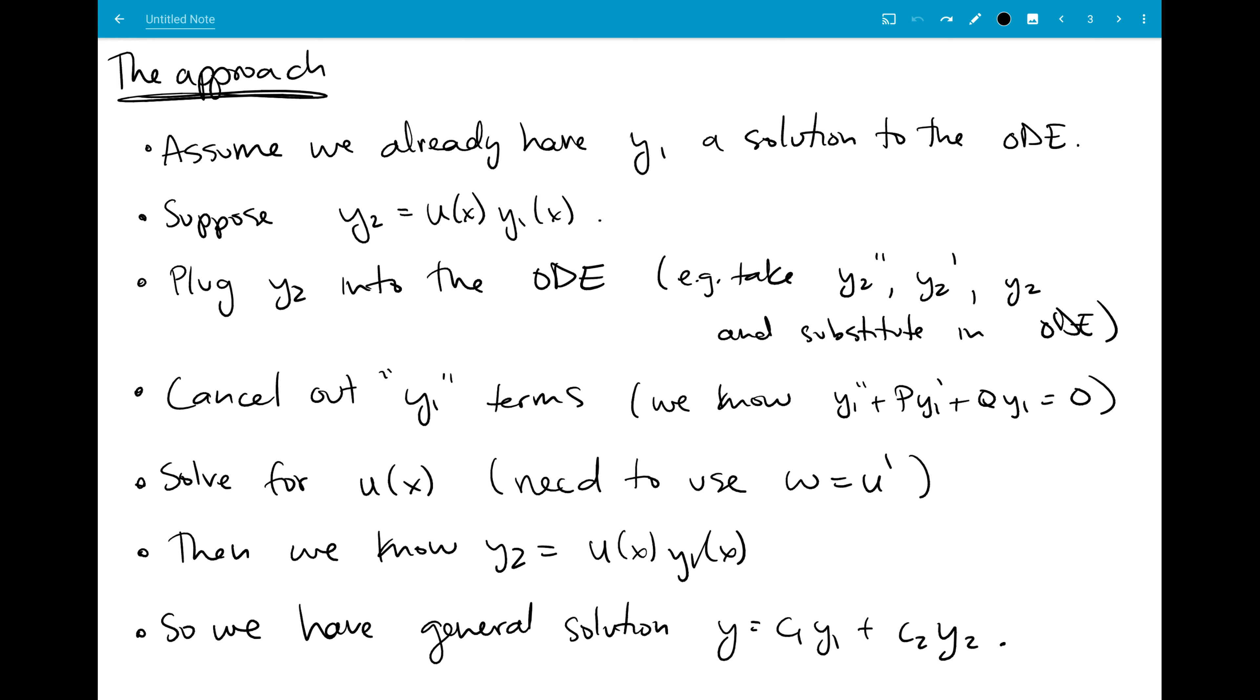And then the terms are actually going to cancel out using the original differential equation that y1 satisfies. And then that gives us a differential equation that we have to solve for u, and the way we do that is by taking w equal to u prime. So to find u, we turn it into a first order problem of finding w.